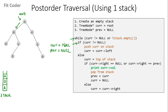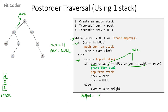Then in the next iteration, `current` is null but the stack is not empty, so we come in the else part. `Current` is now top of stack, which is H. We check right of `current` — right of H is null, so this if condition is true. We print the value of `current`, so we print H. We pop from the stack. We set `previous` equal to `current`, and we set `current` equal to null.